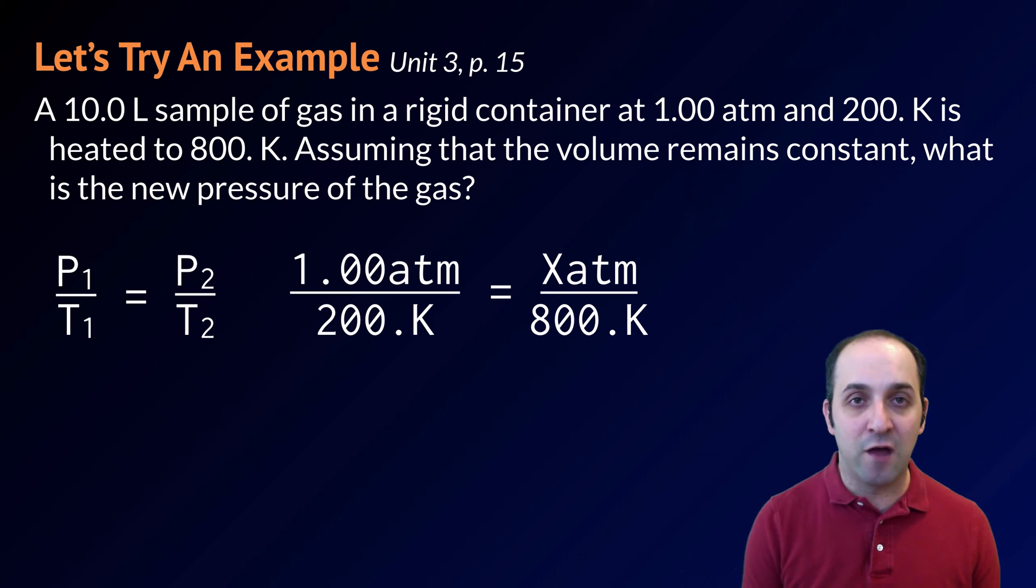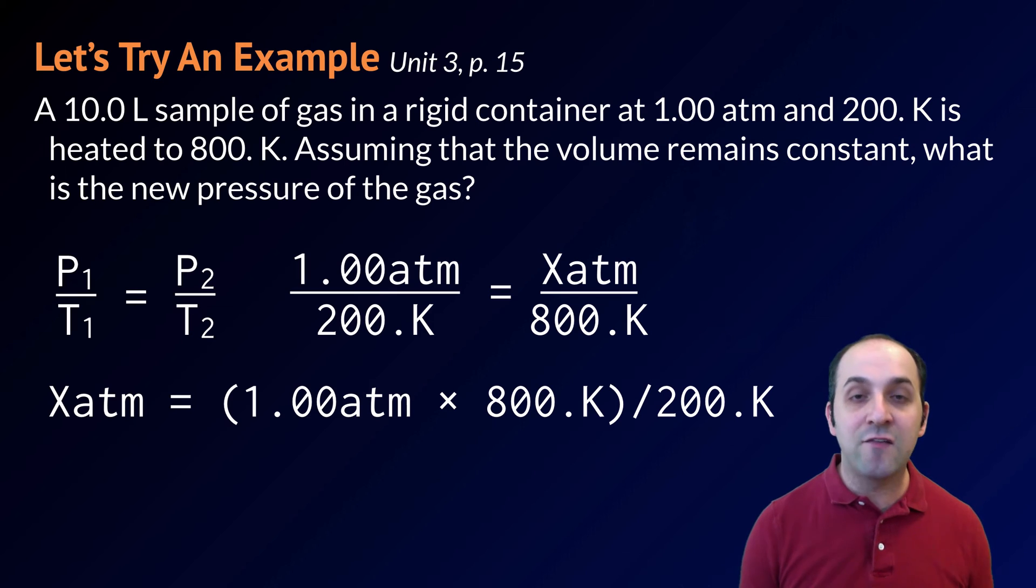Cross-multiplying and dividing to isolate x, I get that x is going to be equal to the product of 1 atmosphere times 800 degrees Kelvin divided by 200 degrees Kelvin.